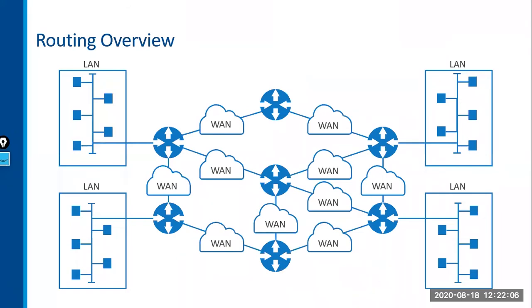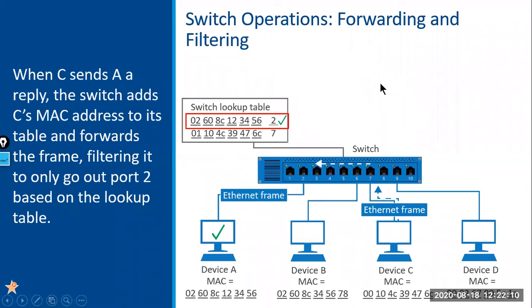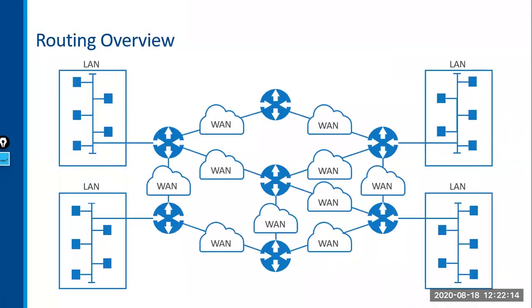Routing is the other key function. Switching forwards traffic internally in local networks, while routing helps forward traffic between networks. I like to use the analogy that routers and routing are like airlines — airlines get us from one airport to another, but they don't care how or even if we get to our final destination. Routers help us get from one network to another. But once we get to the destination airport, we use Uber or a shuttle — that's the equivalent of switching. The airline is the equivalent of routing.